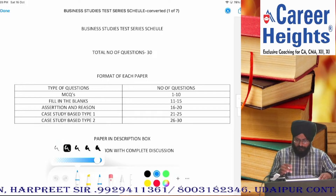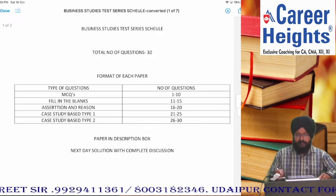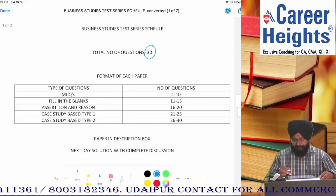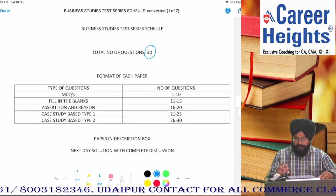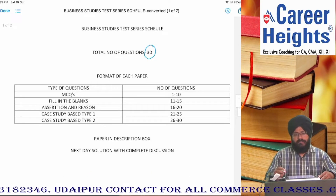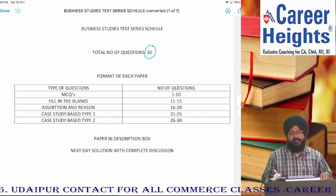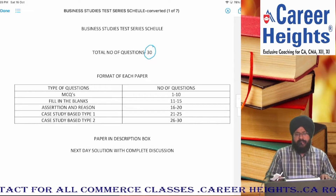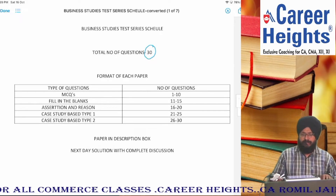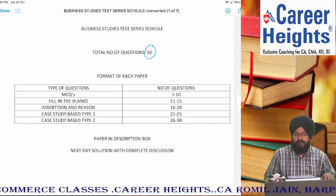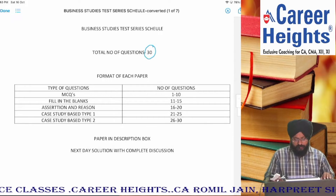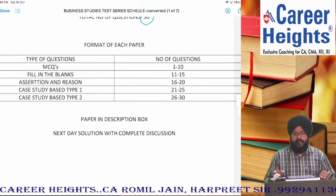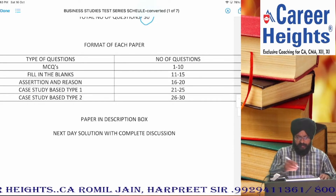So students, jo hamara test schedule hai, aap logo ko yahan par dikha hoga. Total number of questions jo honga har test mein, they will be 30. So there will be 30 questions in total. Ismein students, sample paper ka analysis ke do videos mein aapko dal rakhe hain — agar aapne nahi dekhe hain toh please unhe dekh lijiye. 4 type ke questions humne us sample paper mein dekhe the: MCQs, fill in the blanks, assertion-reason based questions, and case study questions. So yahan par jo format hai, wo lagbhag wahi hai jo sample paper mein hamare paas tha. So there will be 10 MCQs.